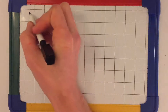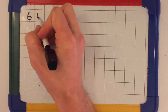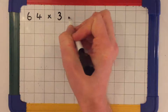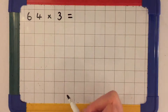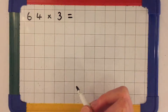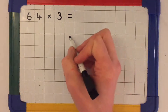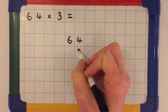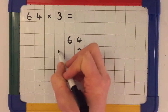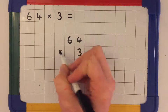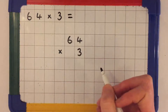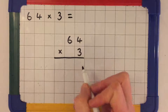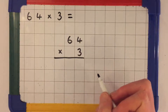We're going to look at solving 64 multiplied by 3. The first step in solving this equation is to write down the two numbers we're multiplying together with the larger number on top, and then we draw a line underneath those two numbers.